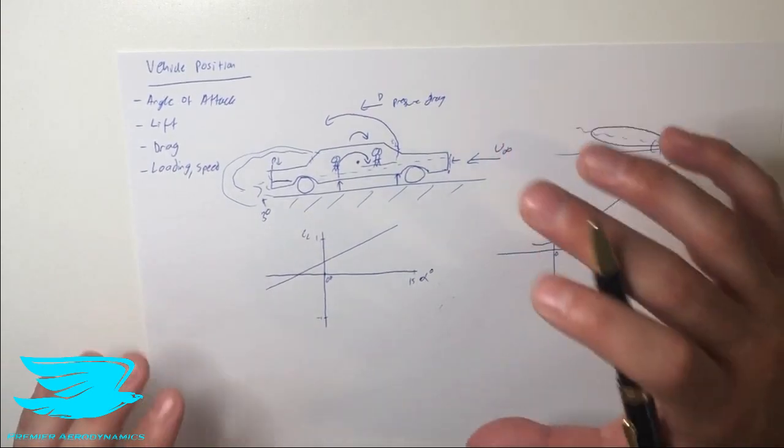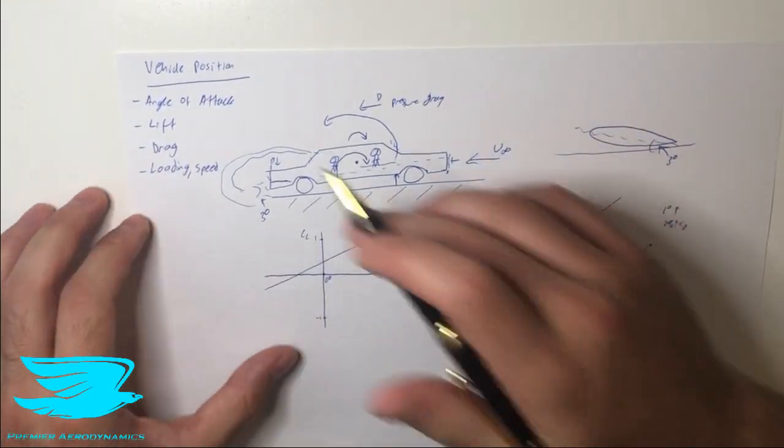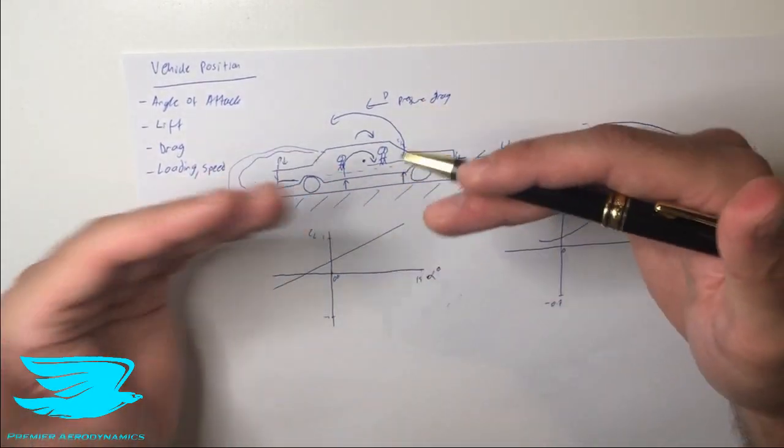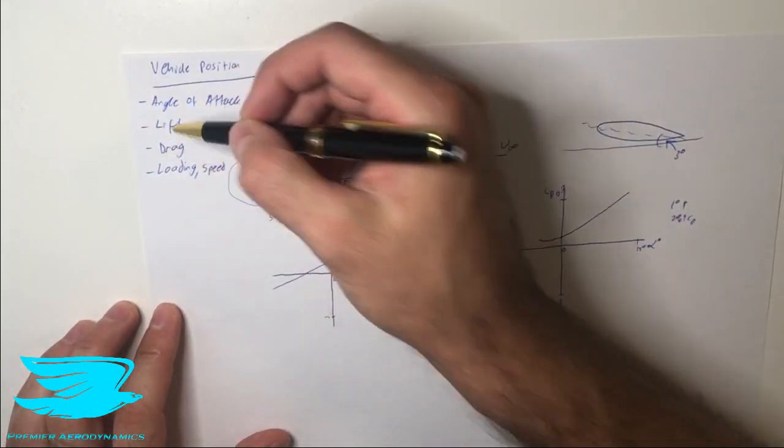So that is how the vehicle position, so the angle of attack, affects the lift, drag, and how the loading and speed of the car affect the car's orientation and, in sequence, the lift and drag.